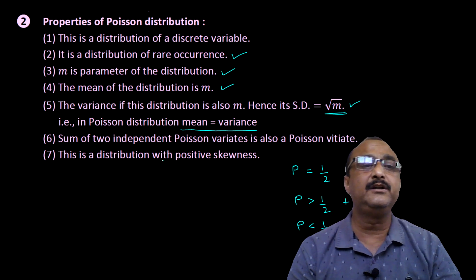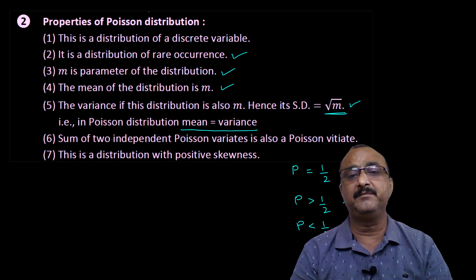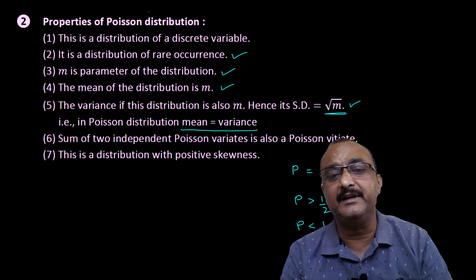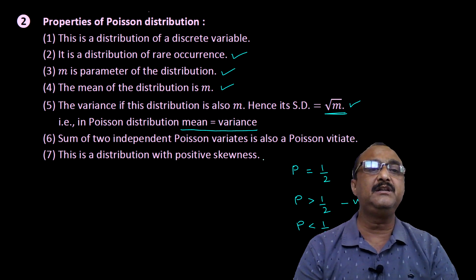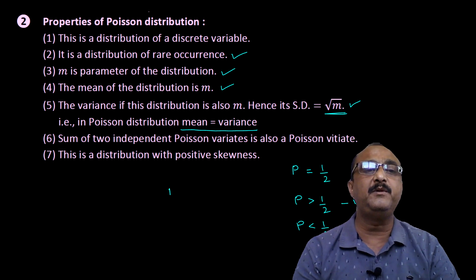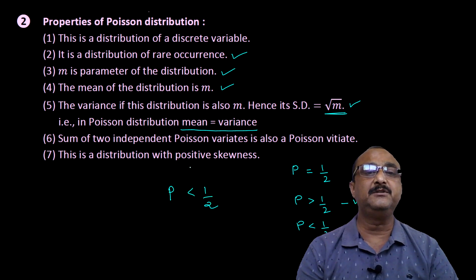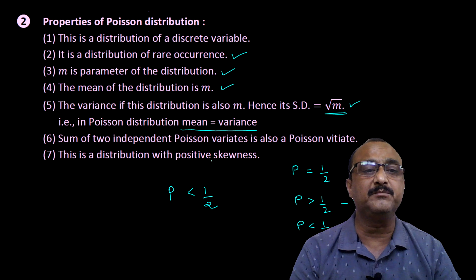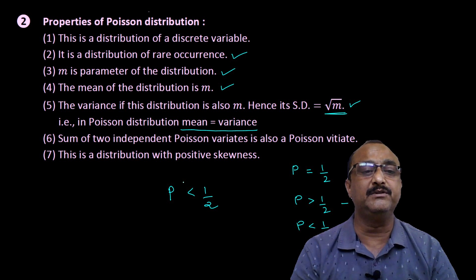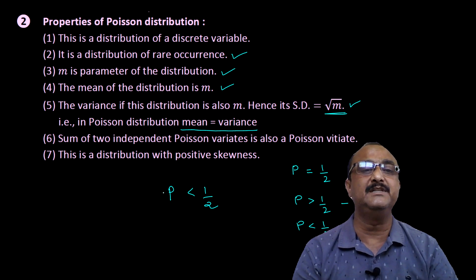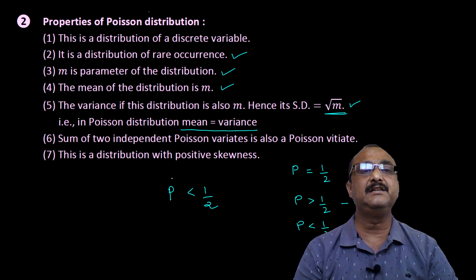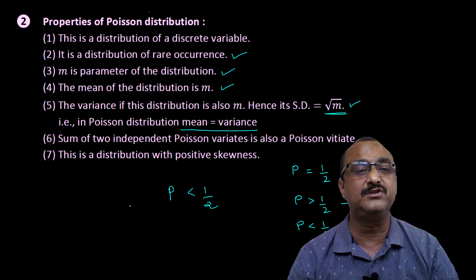Sixth, the sum of two independent Poisson variates is also a Poisson variate. Seventh, Poisson distribution has positive skewness. In binomial distribution, when p equals 1/2 it is symmetrical; when p is greater than 1/2 it is positively skewed; when p is less than 1/2 it is negatively skewed. For Poisson distribution, since probability is always less than 1/2 or near to 0, it is always positively skewed.